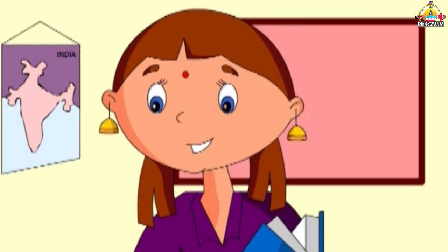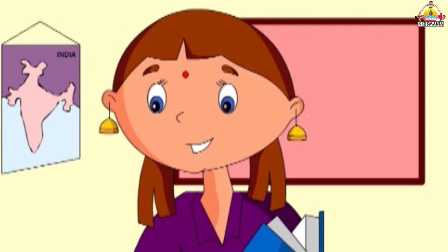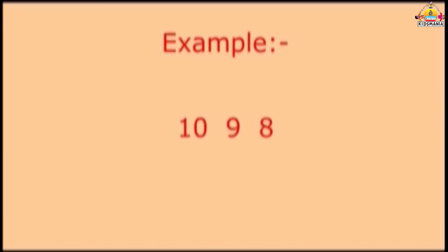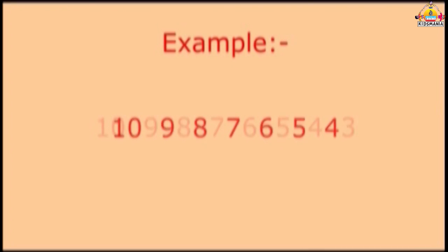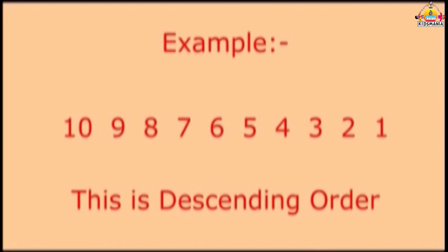As we have learnt ascending order, we now learn descending order also. Descending order means writing the numbers from big to small. For example, 10, 9, 8, 7, 6, 5, 4, 3, 2, 1. This is descending order.